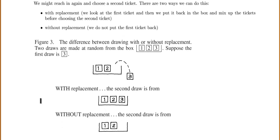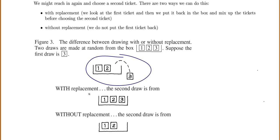This figure demonstrates the difference. We make two random draws from a box with numbers one, two, three, and suppose the first draw is three. With replacement, the next time we draw we still have one, two, three to choose from. Without replacement, the second draw only has one and two available because three was already drawn.